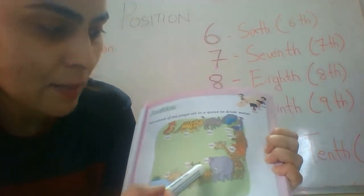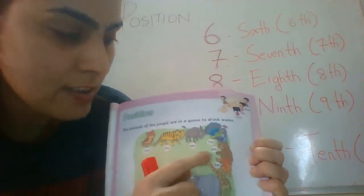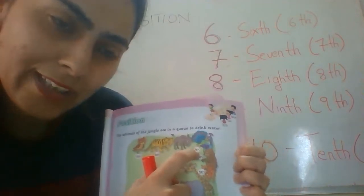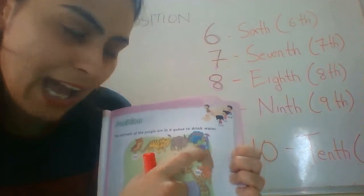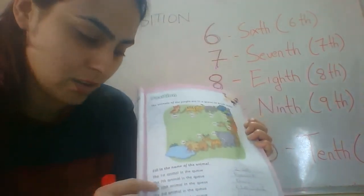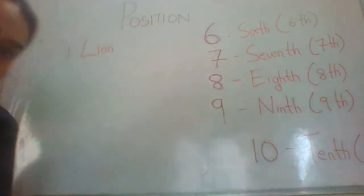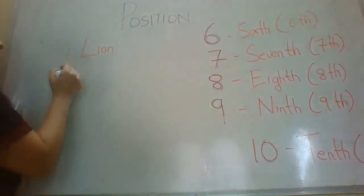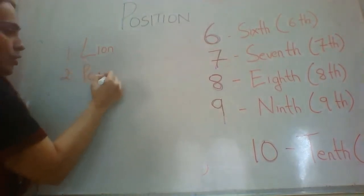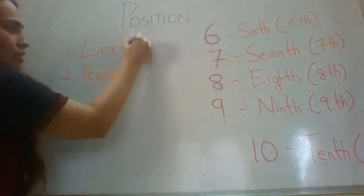Now let's see where number seven is. At the seventh position the animal is a peacock. So the answer for question number two is peacock — we will write peacock.